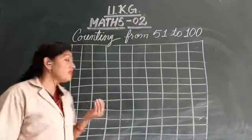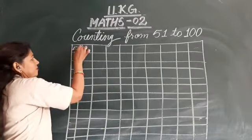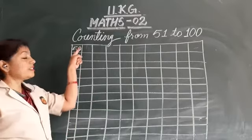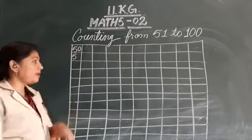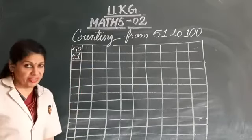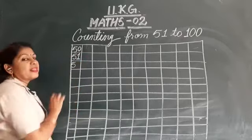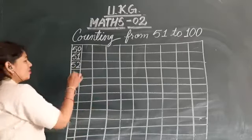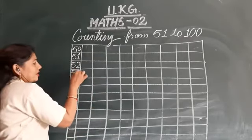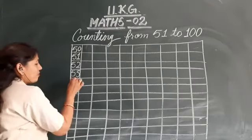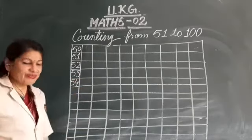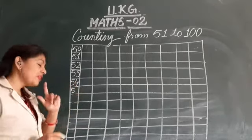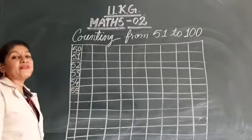This was 50. Now 5 is 50, but you know which number will come there? 1. 51. Now 1 is 2, 52. 53. 54. Then 55. 56. 57. 58. 59.